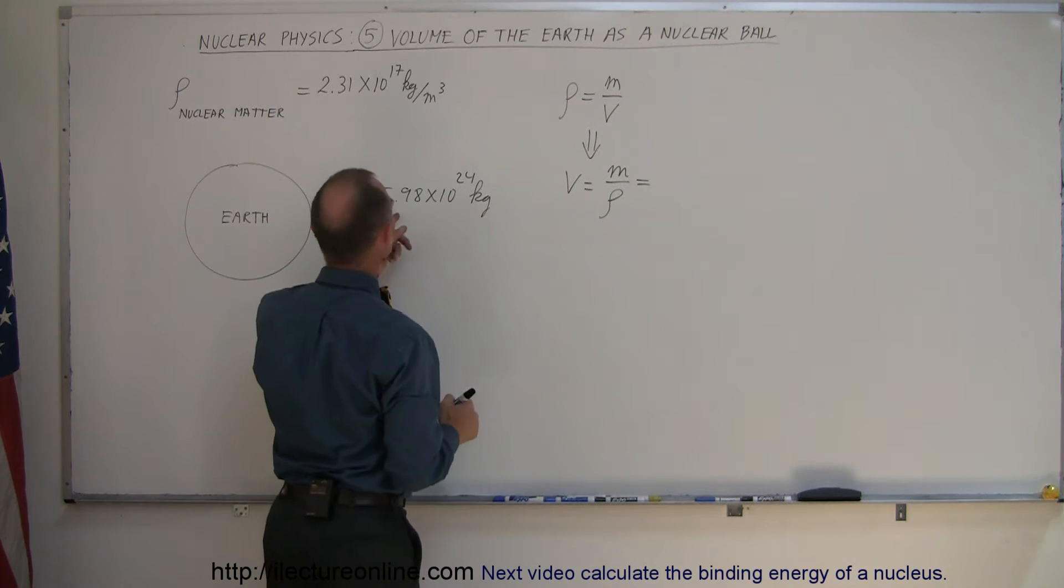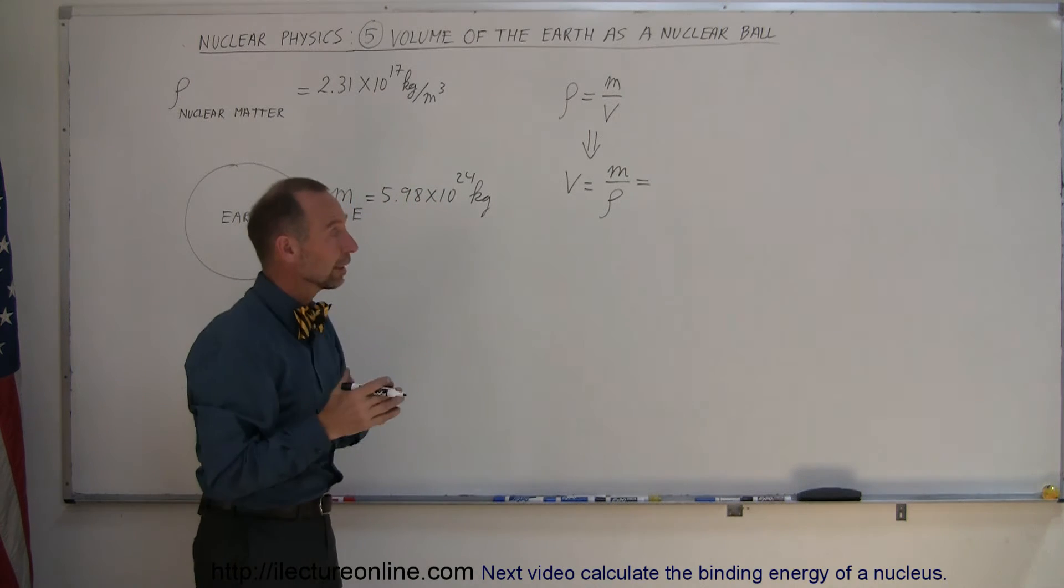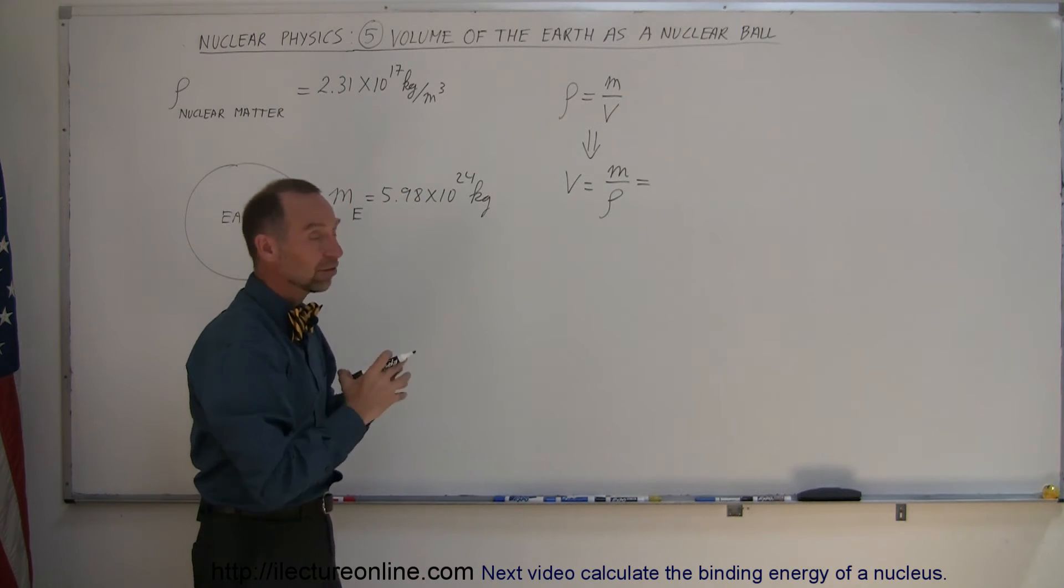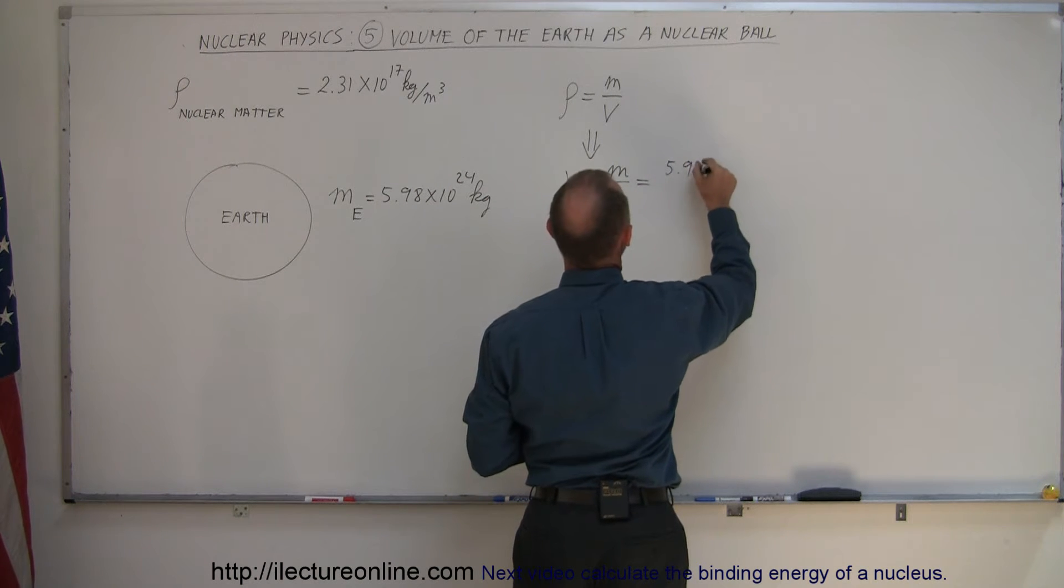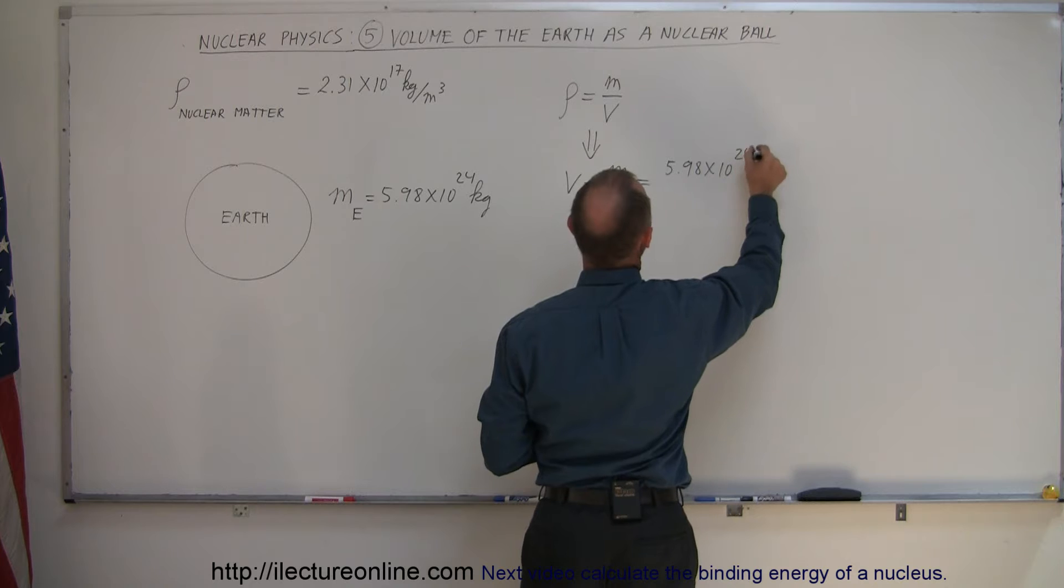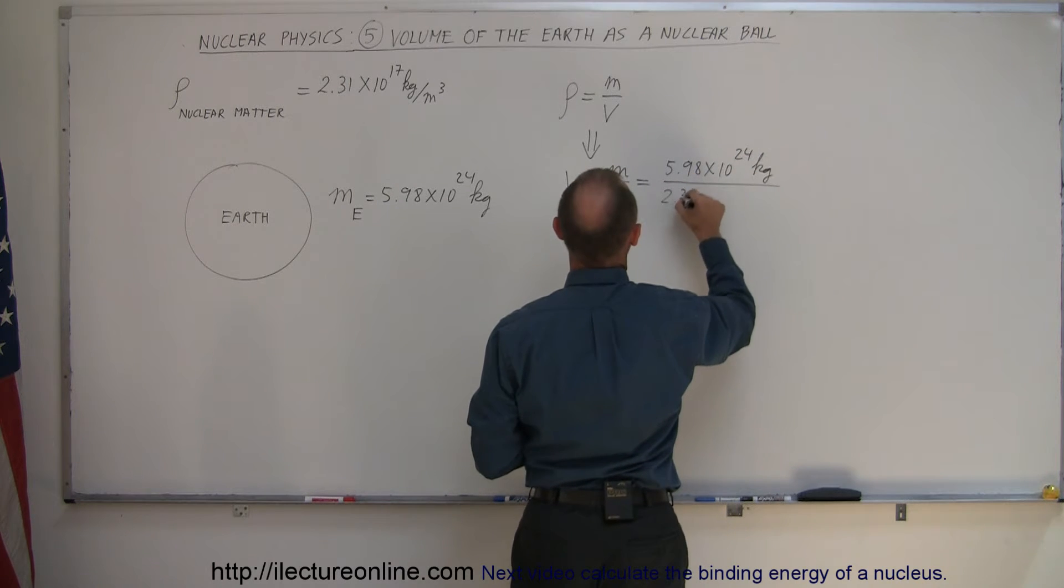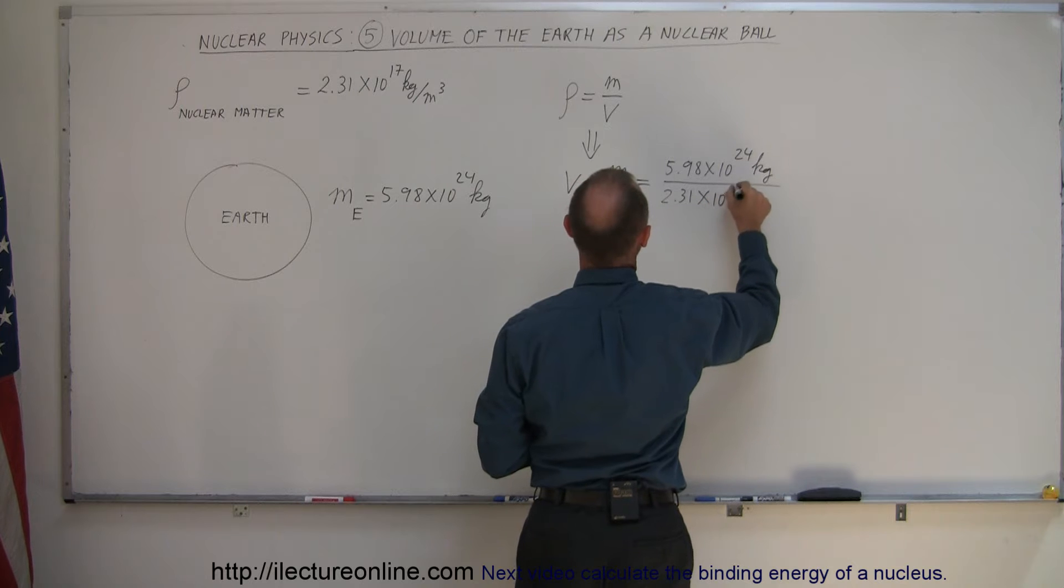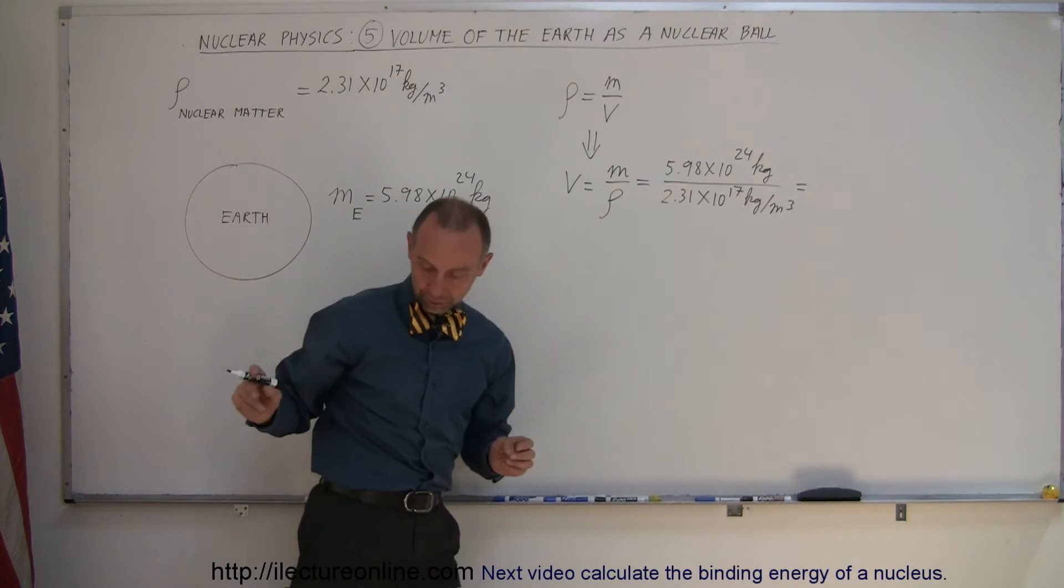So if we take the mass of the Earth and divide it by the density of nuclear matter, we would get the volume of the Earth if the Earth was completely pressed together and turned into a nuclear ball. So we have 5.98 times 10 to the 24 kilograms and we divide that by 2.31 times 10 to the 17 kilograms per cubic meter. We now get the volume of the Earth.